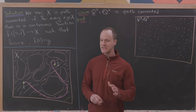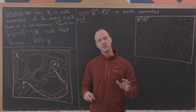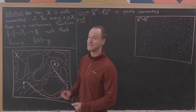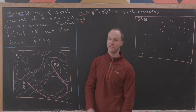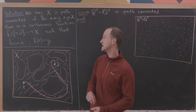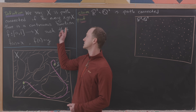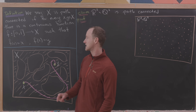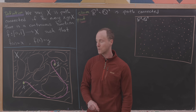It has to do with the topological idea of path connectedness. So let's quickly look at the definition. We say a set X — really a topological space — is path connected if for every X and Y in X, there's a continuous function from the unit interval to the set X, so that f(0) is X and f(1) is Y.